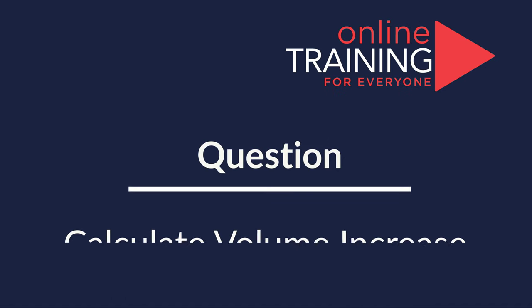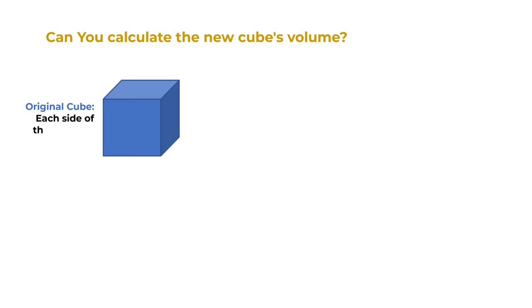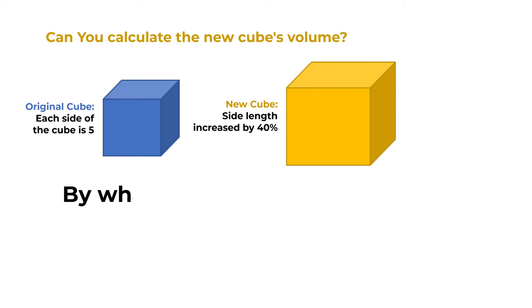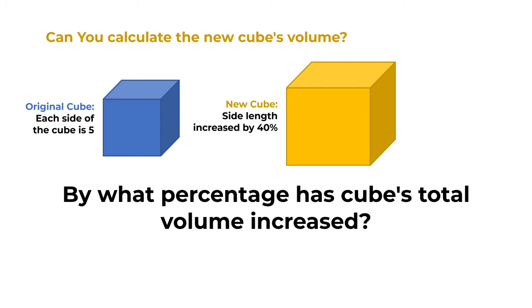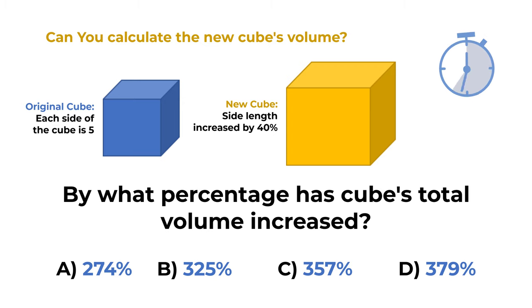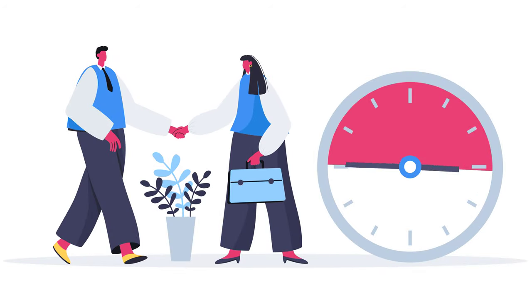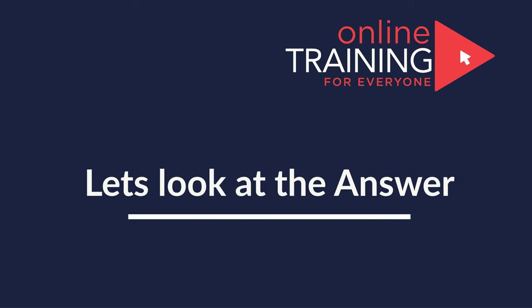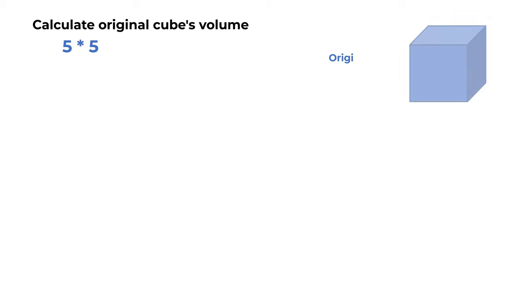Here is a very interesting question we frequently see on the test. A 5×5×5 cube has its side length increased by 40%. By what percentage has the cube's total volume increased? Choices: choice A, 274%; choice B, 325%; choice C, 357%; choice D, 379%. First, calculate the original cube volume: 5 × 5 × 5 = 125.